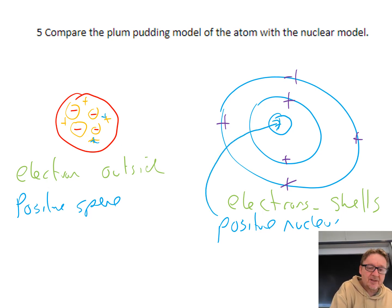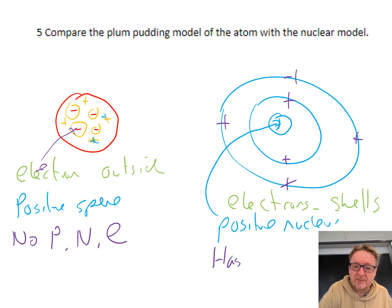The final bit is on the plum pudding there's no protons, neutrons, or electrons named, whereas the nuclear model has protons and neutrons in the nucleus and electrons flying around the outside.